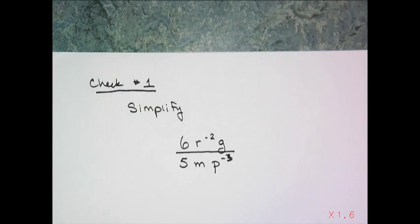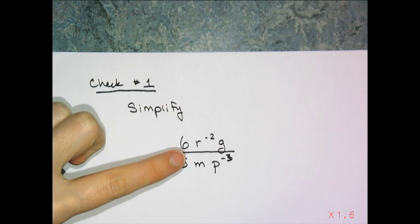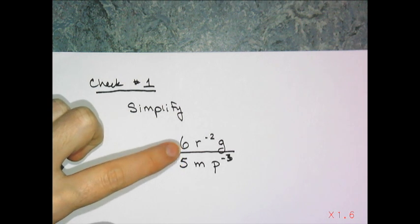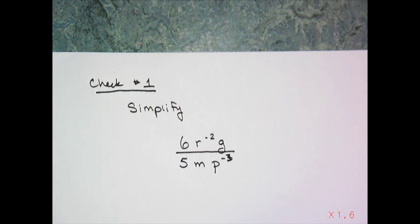Now simplify 6r to the negative 2 times g, over 5m times p to the negative 3.